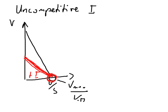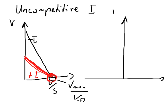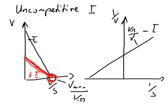In a Lineweaver-Burk plot, one over V versus one over S, the black line is without the inhibitor and the gradient is Km over Vmax. When we add an uncompetitive inhibitor, we see a line that is parallel to the black line — because Km over Vmax is not changed — but it does change Vmax (or one over Vmax) and it changes Km (or one over Km).